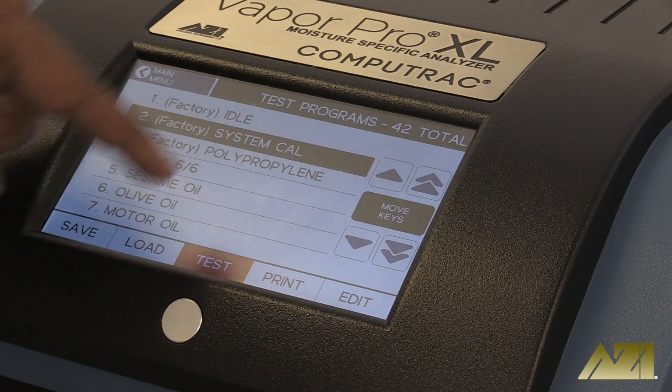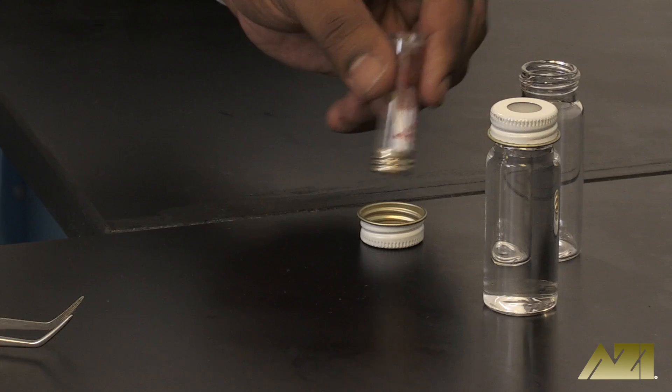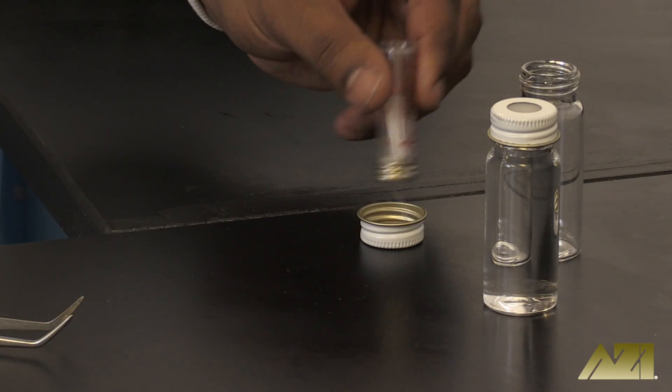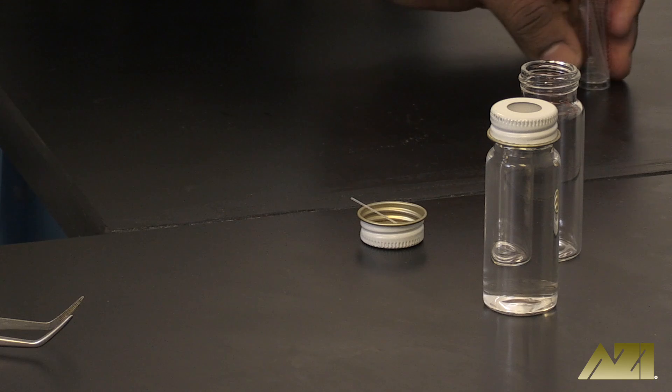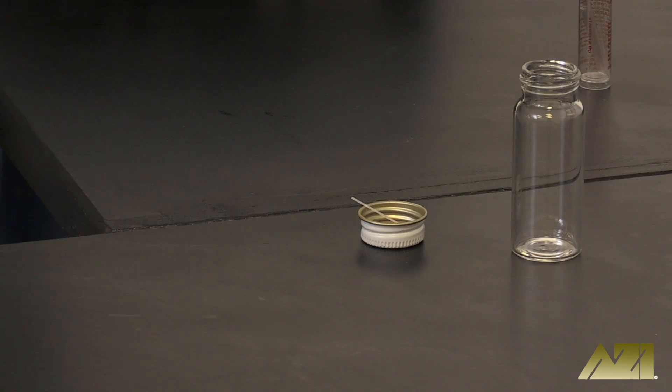To begin, select the test that you wish to perform and allow the instrument to reach the necessary temperature. Begin by tipping the tube of one microliter microcaps upside down and shaking gently until a single capillary comes out. Shake it out over the cap of the bottle you will use for the test to make it easier to pick up in the next step.